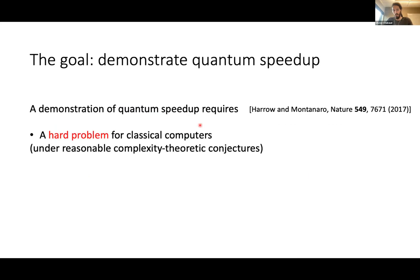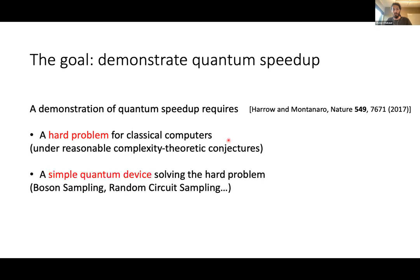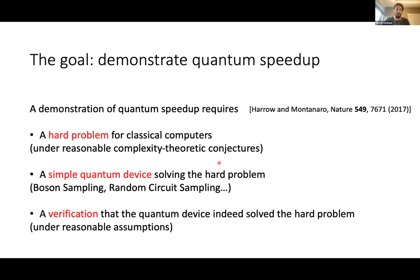If the goal is to demonstrate quantum speedup, this requires three things. First, something which is hard for classical computers, like factoring. Second, a quantum device that can solve that hard problem and can be implemented in the near term. And last but not least, a way to verify that the quantum device indeed solved the hard problem and was not a too-noisy version of the device you were trying to build.